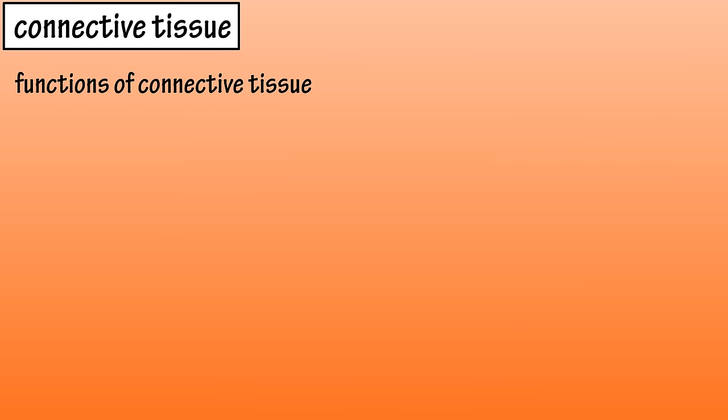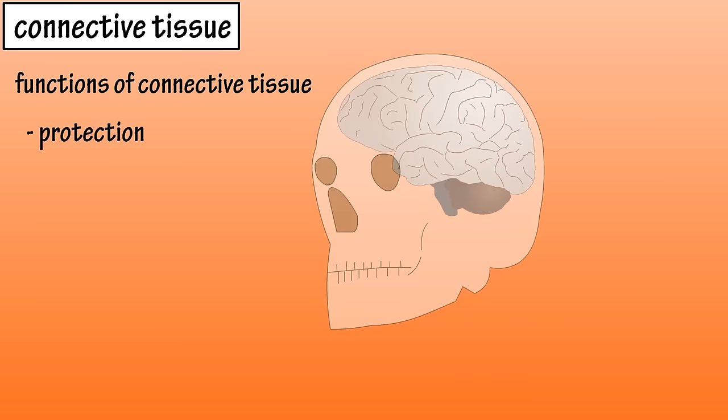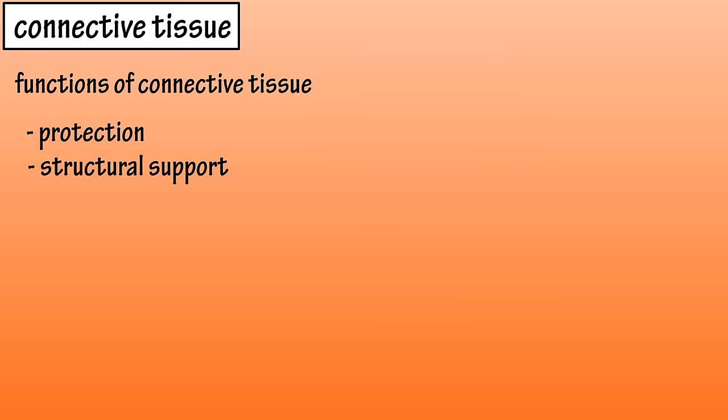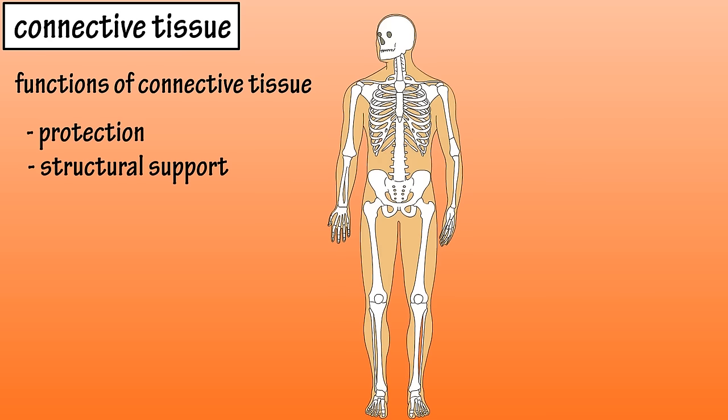There are many functions that different types of connective tissues perform, such as in many cases it provides protection for internal organs. For instance, the skull protects the brain. It can also provide structural support, as bones provide the framework for the body.